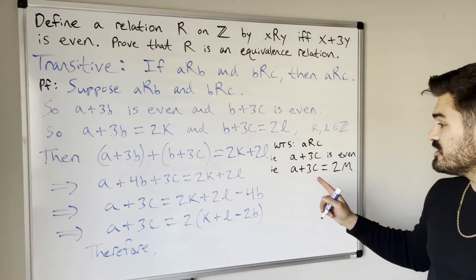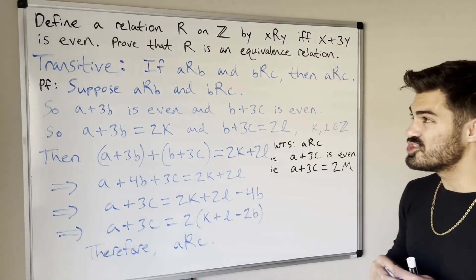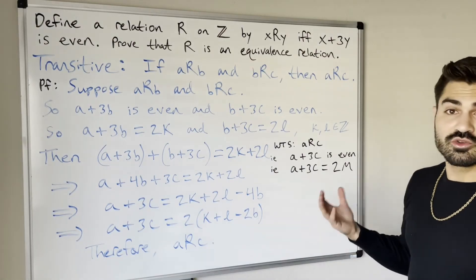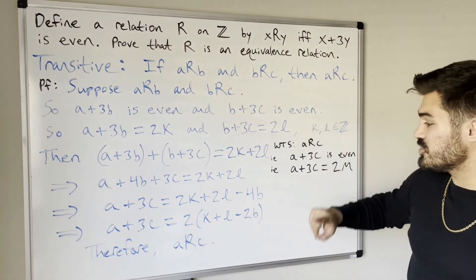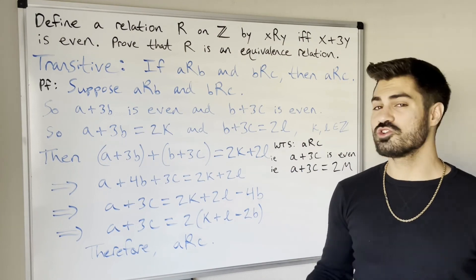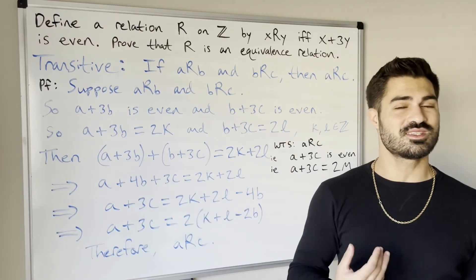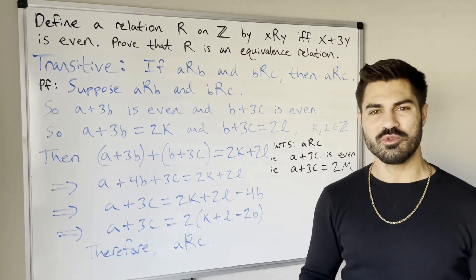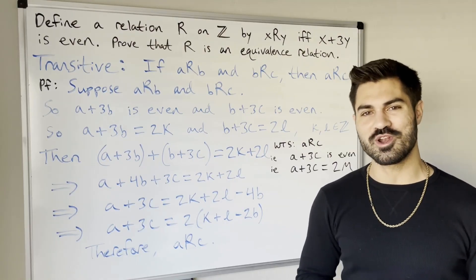Therefore a is related to c, since a plus 3c is even. That's the general structure for proving a relation is an equivalence relation: go through reflexive, symmetric, and transitive. The structure of each sub-proof stays the same regardless of the relation — only the algebra in the middle changes. If you have any comments or questions leave them below, like and subscribe, and keep flexing those brain muscles!